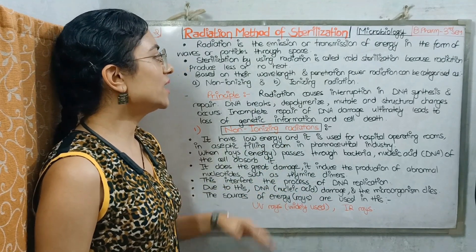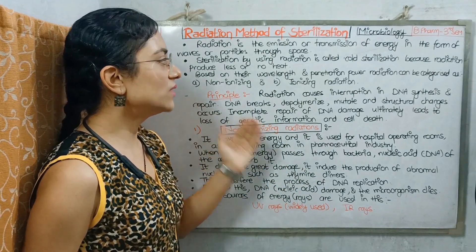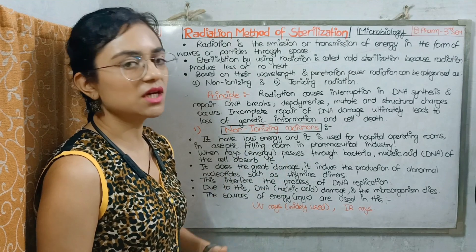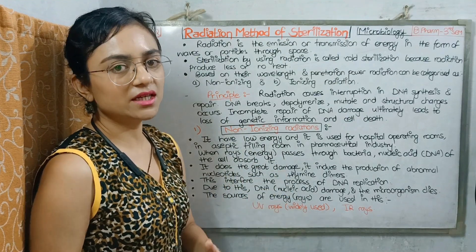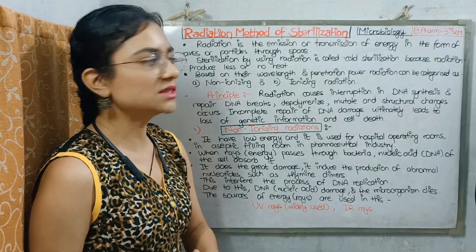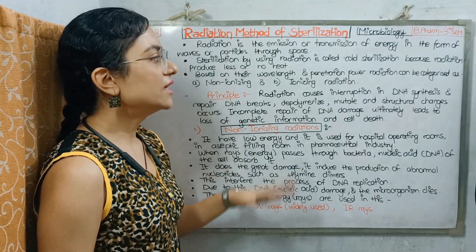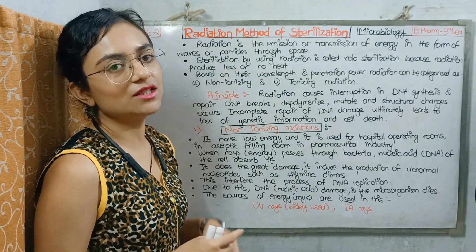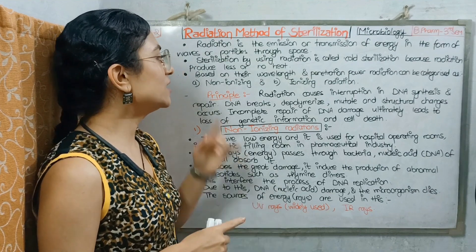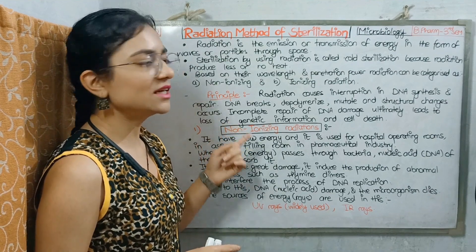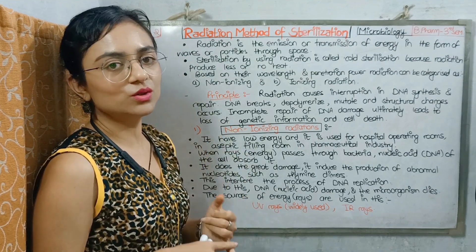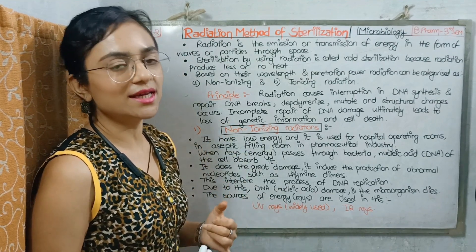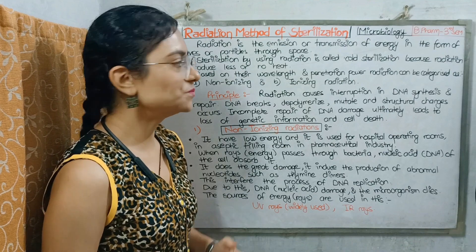Based on wavelength and penetration power, radiation is categorized into two parts: Non-Ionizing Radiation and Ionizing Radiation.